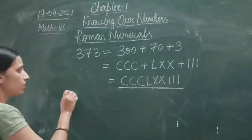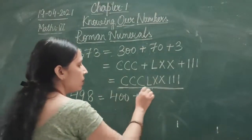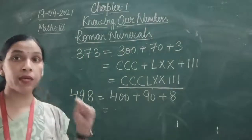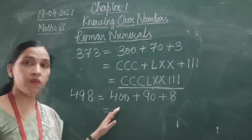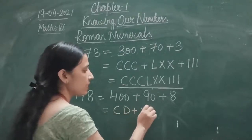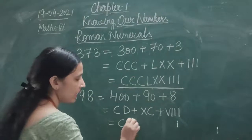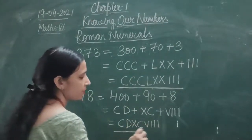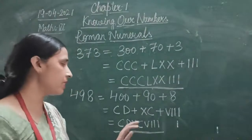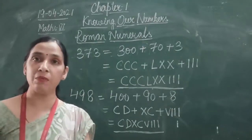Let's take one more example: 498. We write 400 plus 90 plus 8. You cannot write any Roman numeral more than 3 times, so for 400 we subtract C from D. 90 is XC and 8 is VIII. So the symbol is CDXCVIII. Let's revise the basic rules of Roman numerals and expanding brackets.